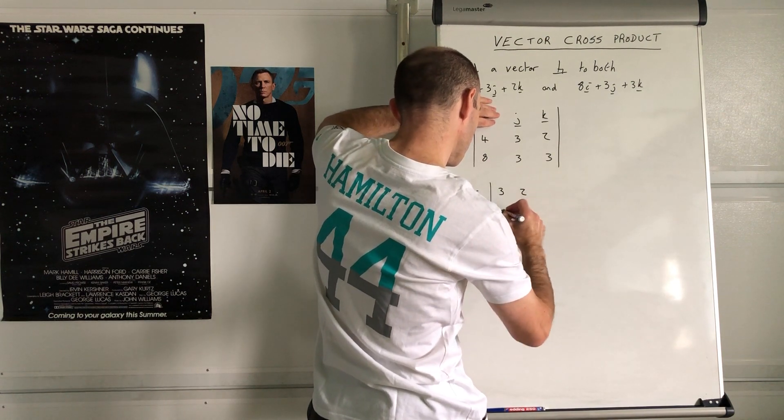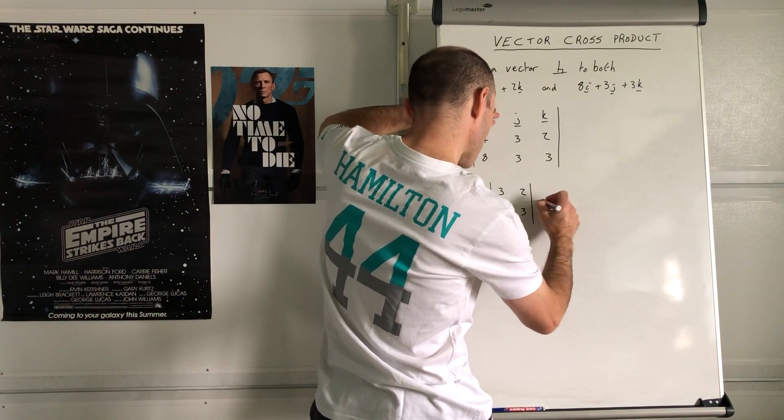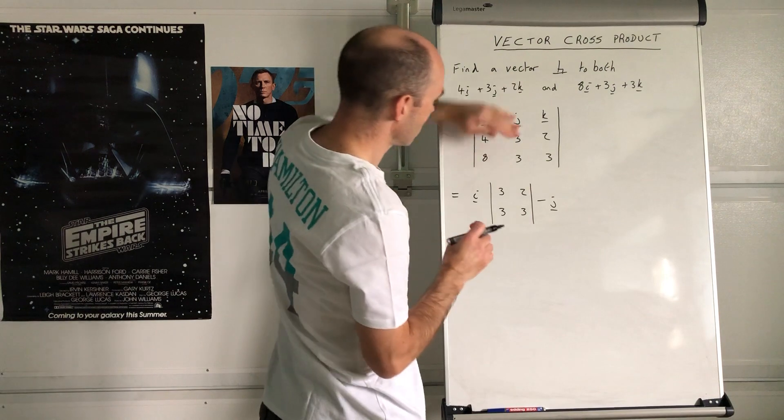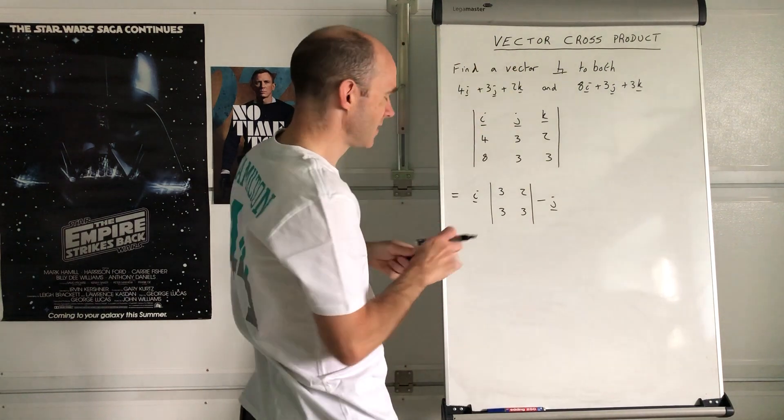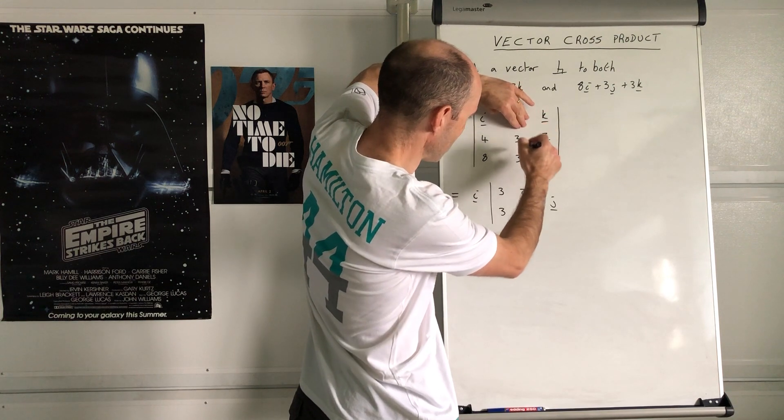Remember to subtract the next one which is j. Cover that up and cross out everything in that column and that row.